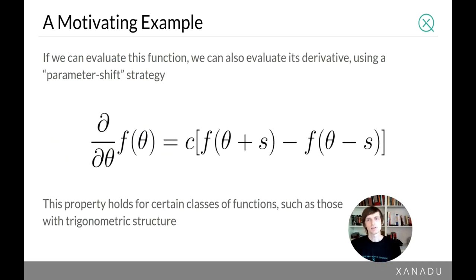So this is what we can call a parameter shift rule. You have a function and that function admits a formula that says its derivative can be obtained by shifting that same function forward by some value s, some fixed value s, shifting in reverse but at same value s, and then multiplying by some constant c. This is not a general property of functions, but it's a property that some functions have, in particular functions with trigonometric structure.